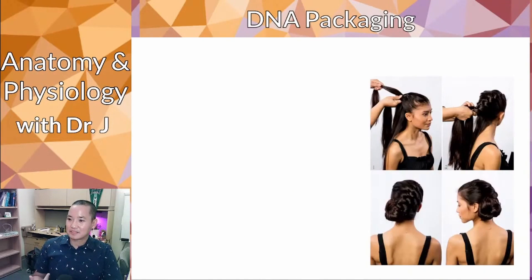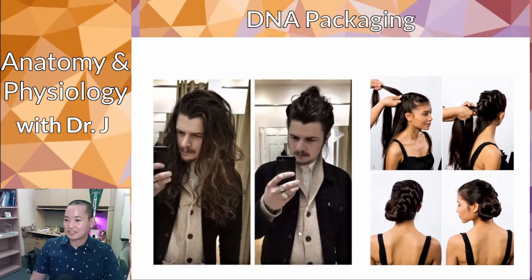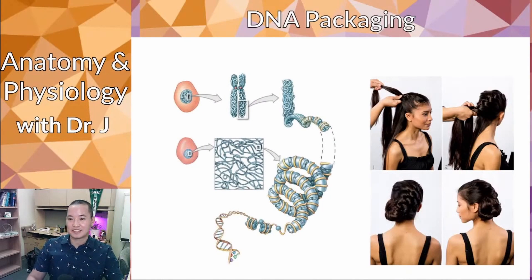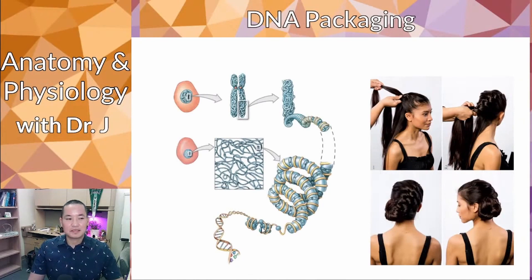This is DNA packaging. Look at her long hair — how can she make it into a more compact structure? How do you take long hair and make it more compact? You wind it up and up until you get this tight bun. This is how your DNA is able to take six feet of DNA and compact it into something your eye can't see. DNA wraps around these little protein globs called histones.